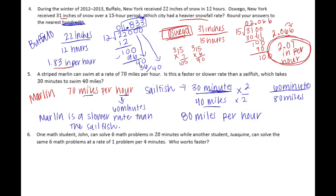Number 6: One math student, John, can solve 6 math problems in 20 minutes, while another student, Joaquin, can solve the same 6 math problems at a rate of 1 problem per 4 minutes. Who works faster? So we've got John who solves 6 math problems in 20 minutes. Then we have Joaquin who solves the same 6 math problems at 1 problem every 4 minutes.